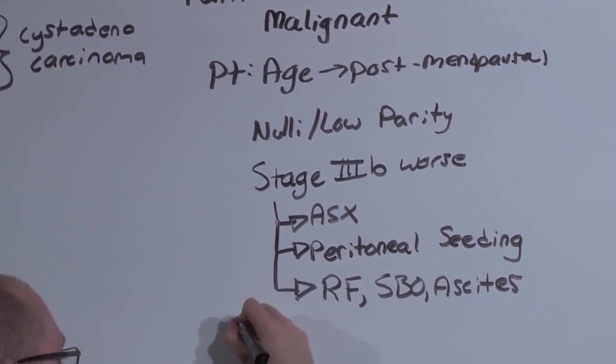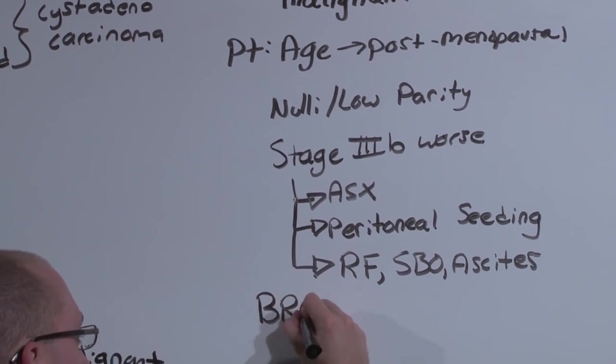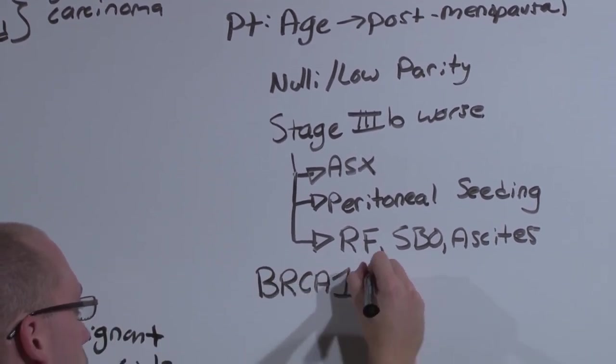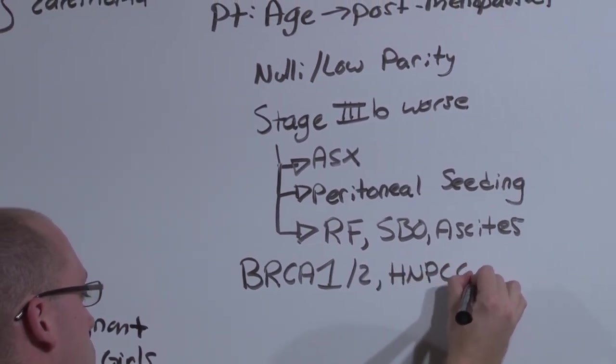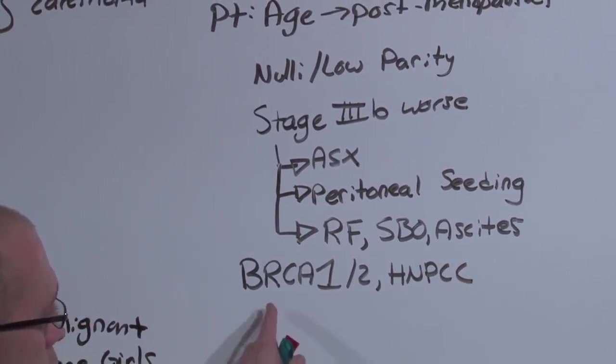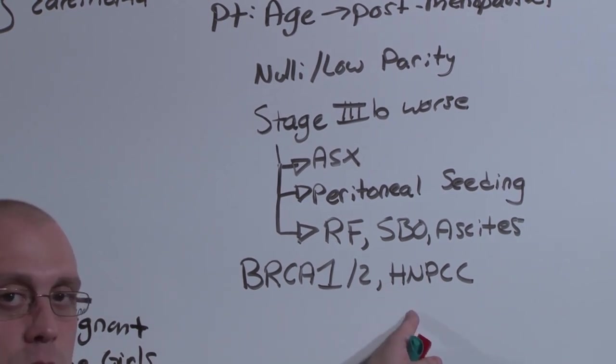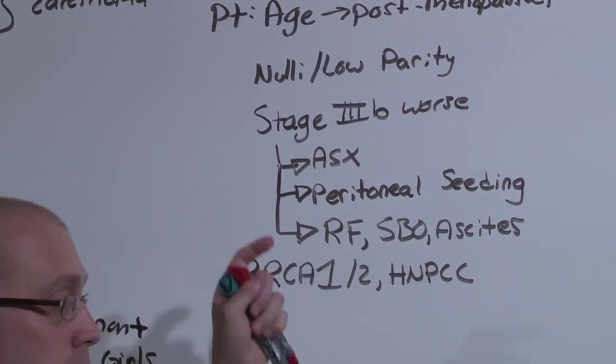And finally, people with specific genetic syndromes, in particular BRCA1, also BRCA2, and the hereditary nonpolyposis colorectal cancer, Lynch syndrome. These patients who have genes significantly predispose their risk for epithelial cell cancers.